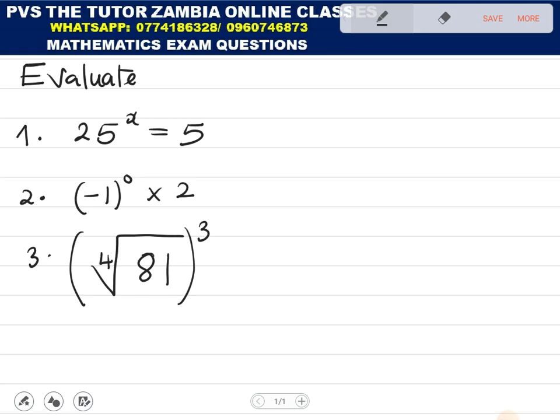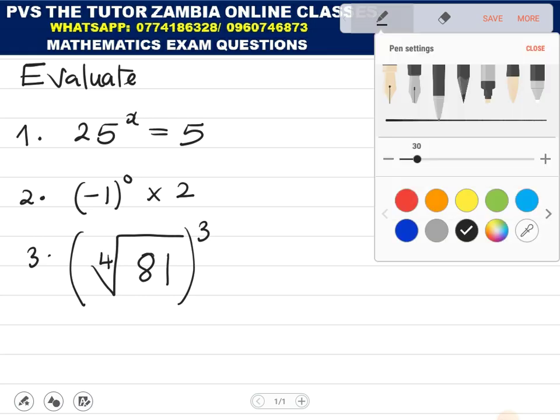So the first one is evaluate 25 to the power x equal to 5. So how do we evaluate them?